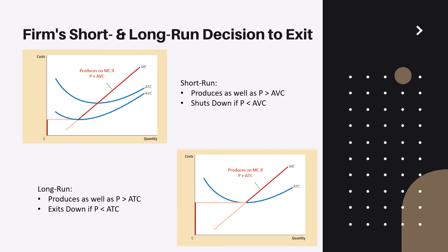Why do we take fixed costs into account in the long run? Because in the long run, fixed costs become more similar to variable costs — companies can affect their fixed costs in the long run, and they are no longer observed as sunk costs. In this situation, if the price is lower than average total cost — the total cost per unit — the company will incur losses and thus make the decision to exit or terminate its activities.